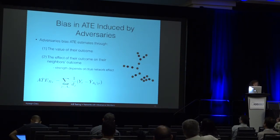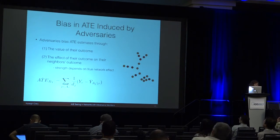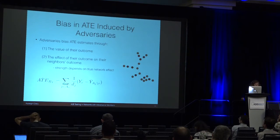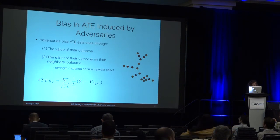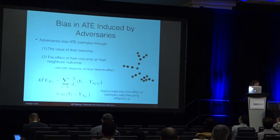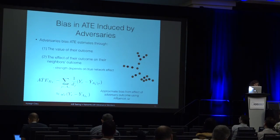We'd like to derive some sort of bound, or derive directly, the bias in ATE induced by adversary behavior. Adversaries bias ATE in two different ways: the first is through the value of their outcome, which is the same as in the non-relational case. The second is through the effect of their outcome on their neighbors' outcomes — but this is tricky because we're still trying to estimate the true network effect, and the strength of that effect depends on the true network effect, so it's circular. You can estimate it by weighting it by the relative degree of your neighbor and the distance between an adversary and their neighborhood's average outcome — essentially this influence metric weighted by the difference between the adversary's outcome and the mean outcome of their two-hop neighborhood.